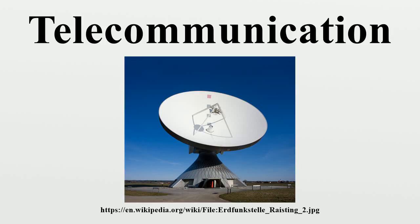A communications network is a collection of transmitters, receivers, and communications channels that send messages to one another. Some digital communications networks contain one or more routers that work together to transmit information to the correct user. An analog communications network consists of one or more switches that establish a connection between two or more users. For both types of network, repeaters may be necessary to amplify or recreate the signal when it is being transmitted over long distances, to combat attenuation that can render the signal indistinguishable from the noise. Another advantage of digital systems over analog is that their output is easier to store in memory.